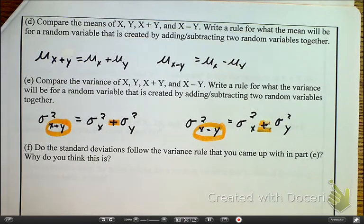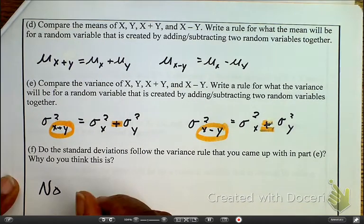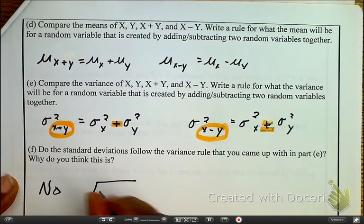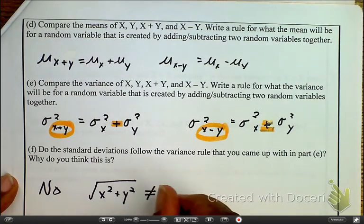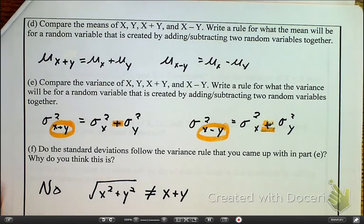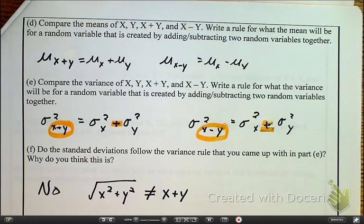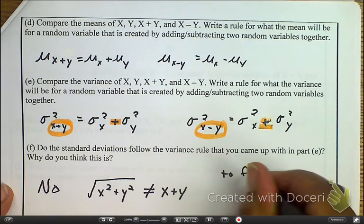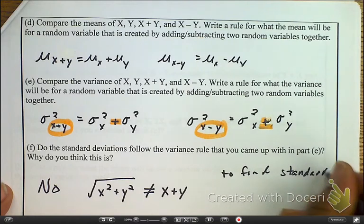So, do the standard deviation follow the same rules as the variance in part E? What do you think? The answer is going to be no. And the reason is because x squared plus y squared, there's your math, people, does not equal x plus y. So, to find the standard deviation, you must do the variance first.